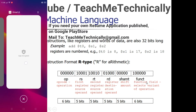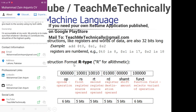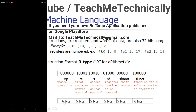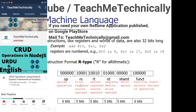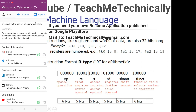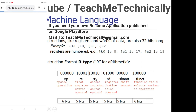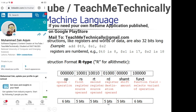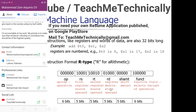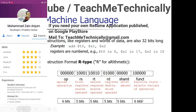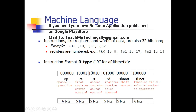After shift amount we have to enter the values of the function field if our operand needs that value. In the R-type instruction we have six bits reserved for opcode, five bits for the first source register RS, five bits for the second source register RT, five bits for the destination register RD, five bits for shift amount, and six bits for the function field.